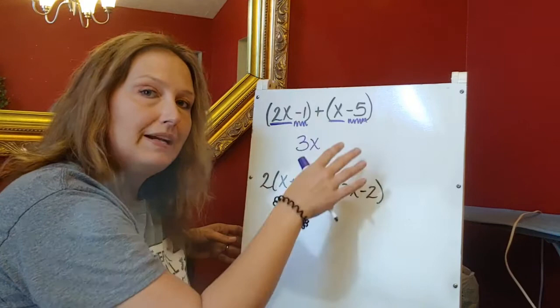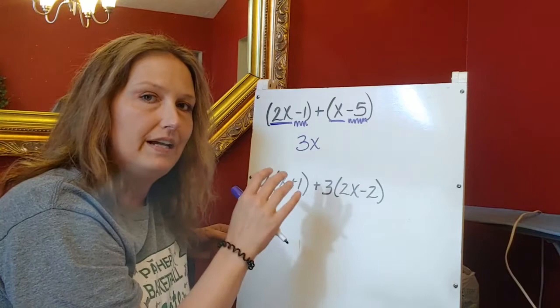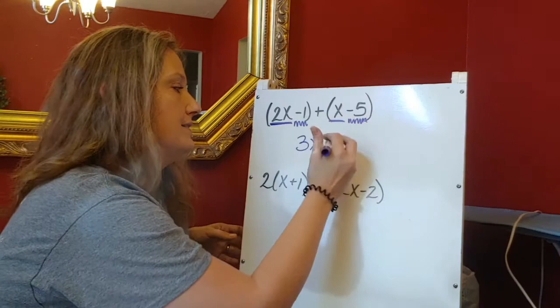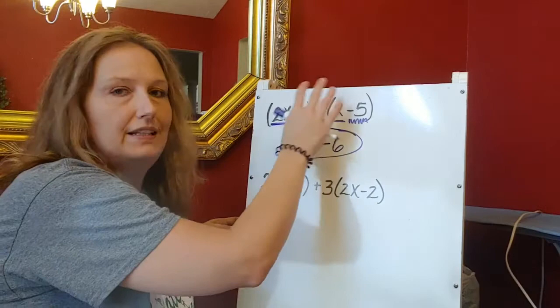Then I'm going to take this negative one and this negative five. I'm going to do negative one minus five. They have the same signs, that means I'm going to add them together and keep that negative with them. So negative one minus five is minus six.